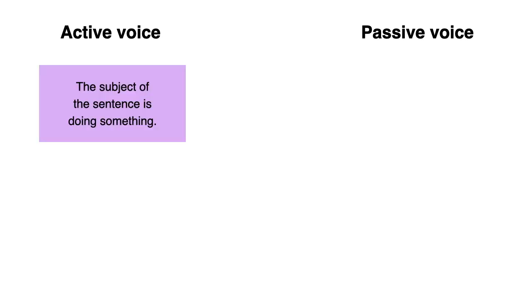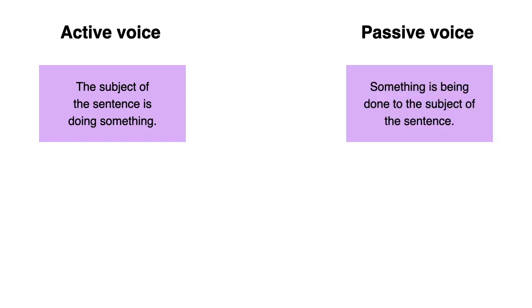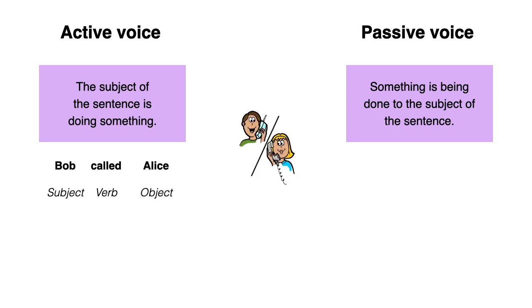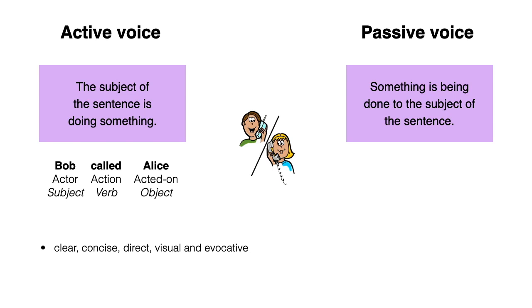So what's the difference between active voice and passive voice? When using the active voice, the subject of the sentence is doing something, whereas in the passive voice, something is being done to the subject of the sentence. Consider the example: "Bob called Alice." Here, Bob is the subject and also the actor because he is calling Alice. The active voice is clear, concise, and direct. It is visual and evocative.